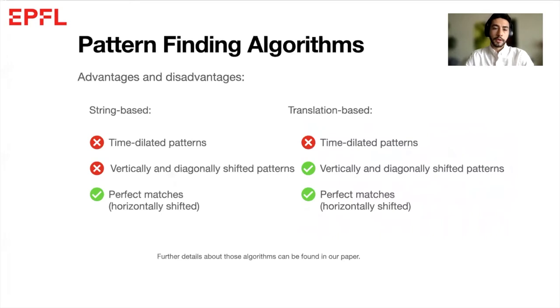Now for the advantages and disadvantages of each approach: both find perfect matches, so horizontally shifted patterns, but the translation-based approach also finds vertically and diagonally shifted patterns.